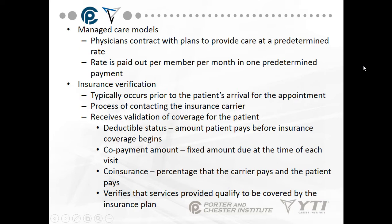Under managed care models, physicians contract with plans to provide care at a predetermined rate, paid per member per month in one predetermined payment. For example, with an HMO, if the predetermined rate is $90 and the physician charges $120, you are not balance billed because the practice agrees that $90 is payment in full. You cannot be balance billed when you have an HMO.